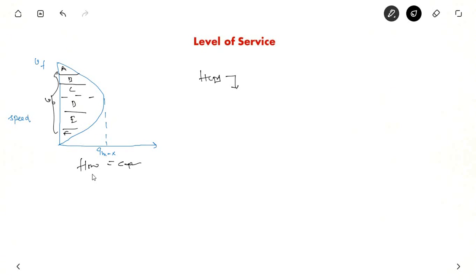Flow, if flow is represented by volume, V, and capacity is C. So this is volume by capacity. As volume by capacity ratio versus speed, you will get A to F different levels of service.